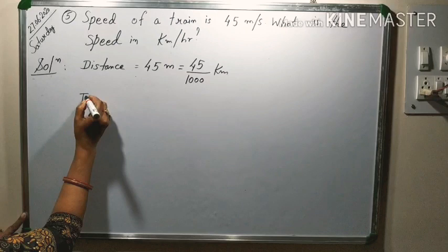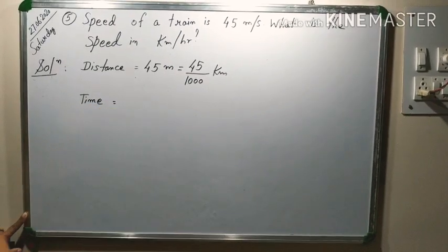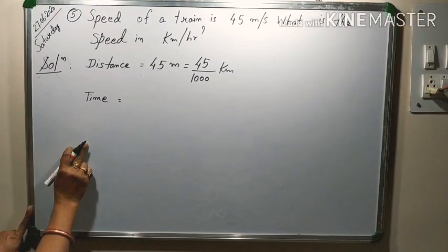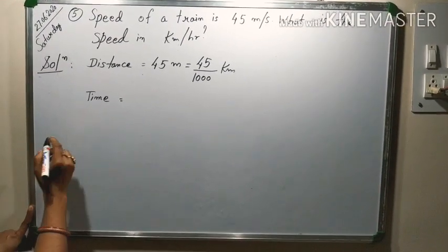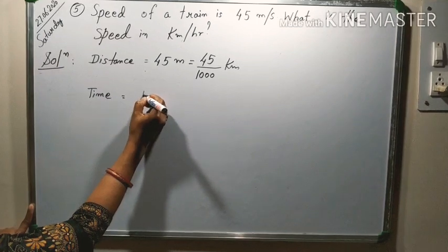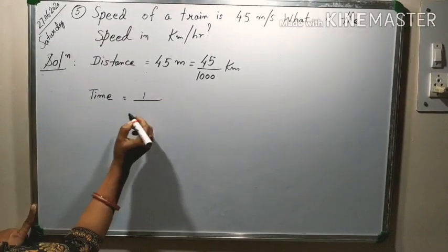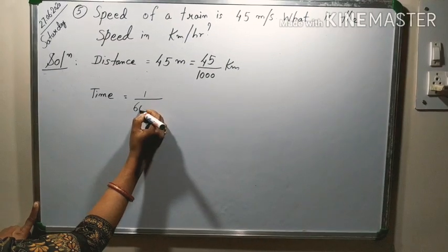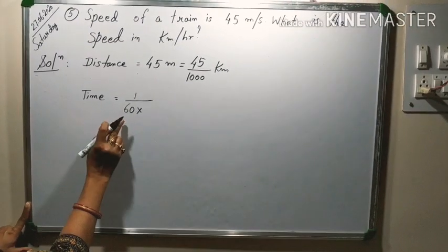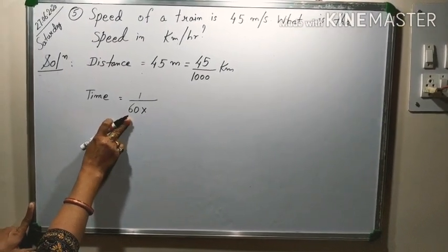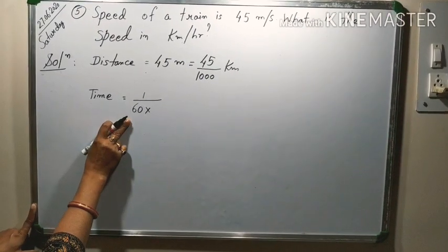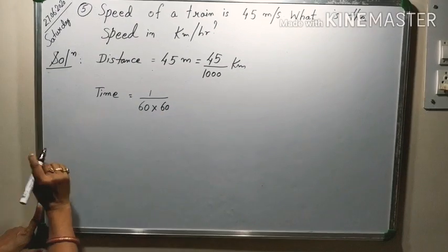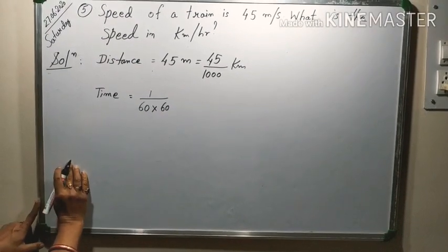Now, time. Meter per second, per second means 1 second is to be converted into 1 hour. So, it will be 1 second to be converted into hour. So, it is to be divided by first when we divide by 60 it becomes minute and again we will divide it by 60, then it is converted into hour.